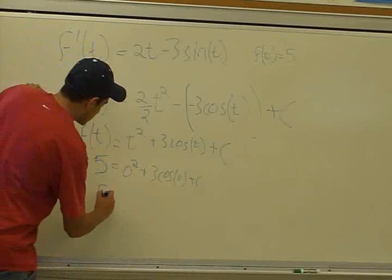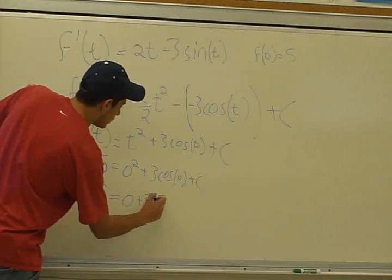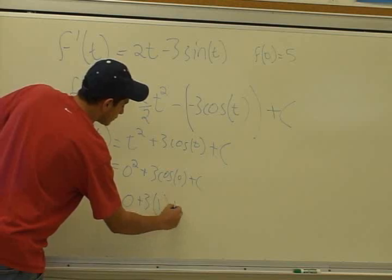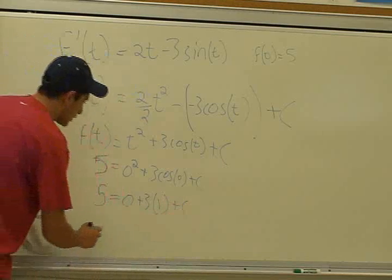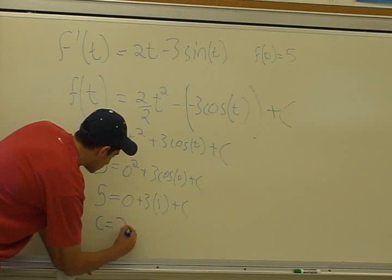And so 5 equals 0 plus 3. And cosine of 0 is 1. So 3 times 1 plus c. So all we got here is c equals 2.